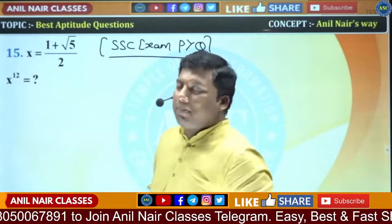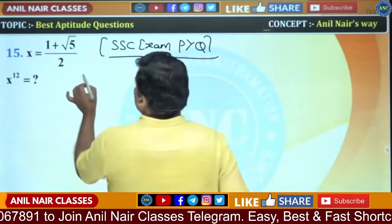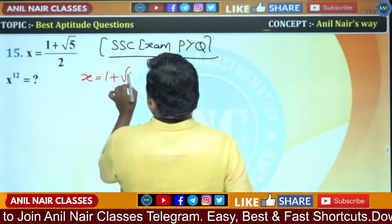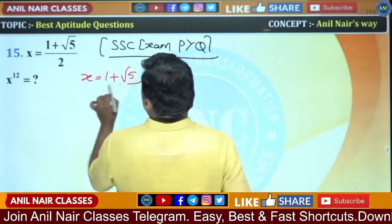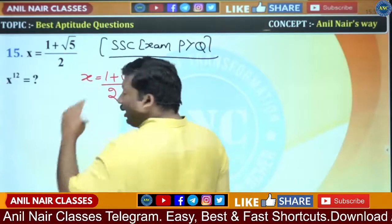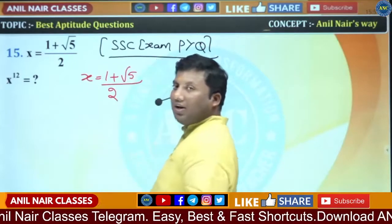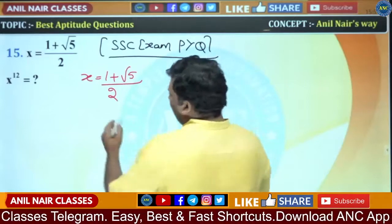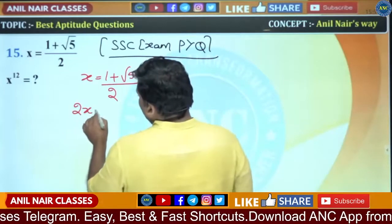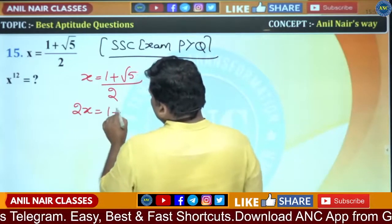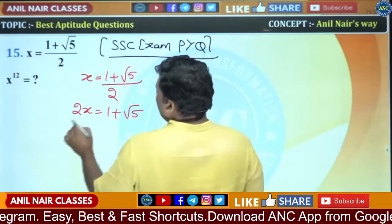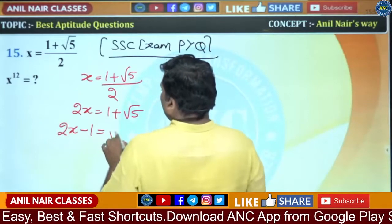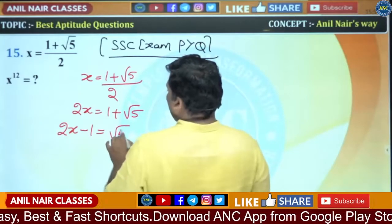X is (1 + √5) / 2. We need to find X to the power 12. Let me cross multiply: 2X is equivalent to 1 + √5. On the left hand side, 2X minus 1 is equivalent to √5.